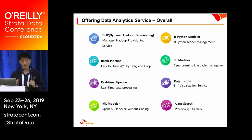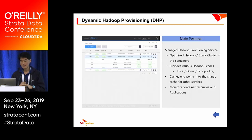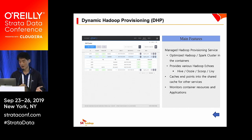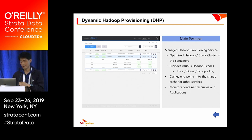Our underlying service is the Dynamic Hadoop Provisioning, or DHP service. It provides a managed Hadoop provisioning service deploying optimized Hadoop Spark clusters with various Hadoop ecosystem components such as Hive, YARN, Sqoop, and Livy. It caches the endpoints of Hadoop components into the shared cache for other services, and monitors container resources and applications.